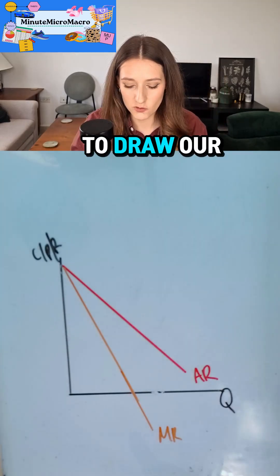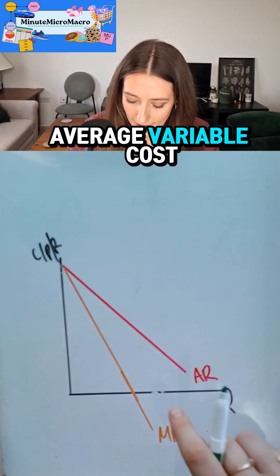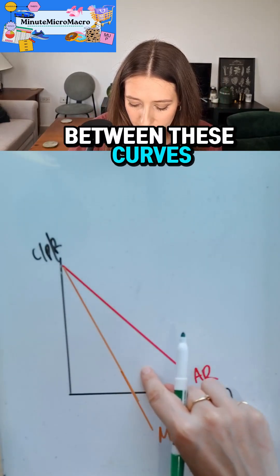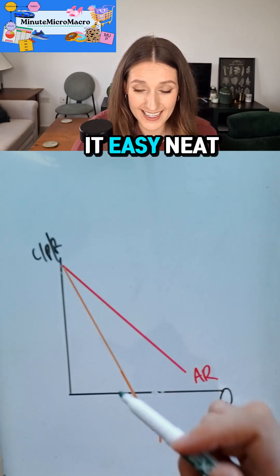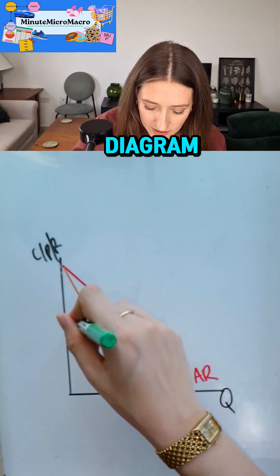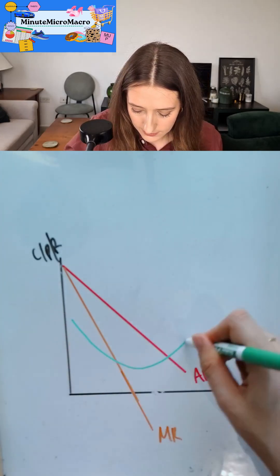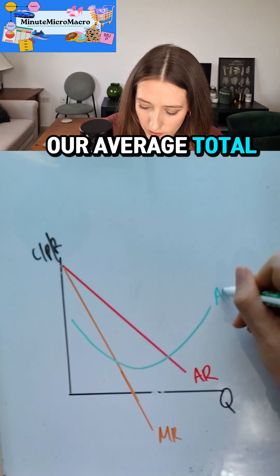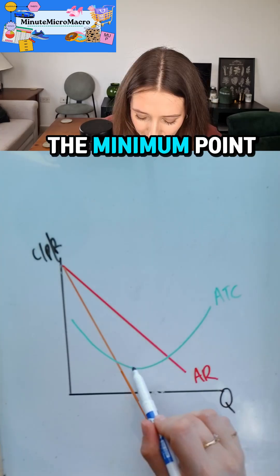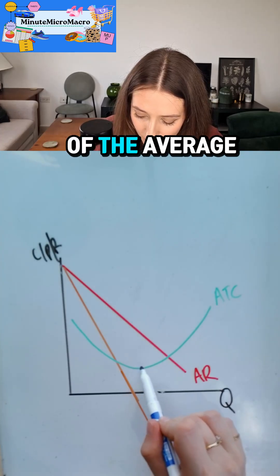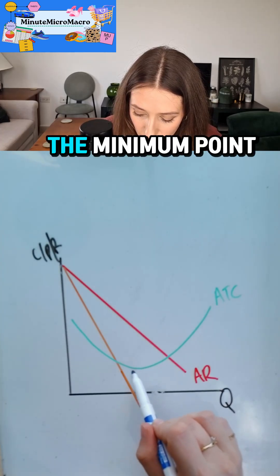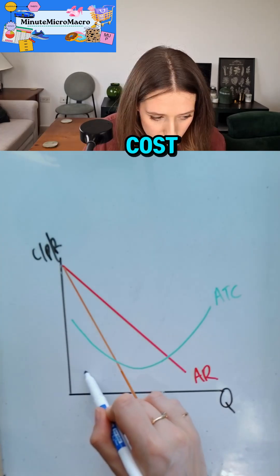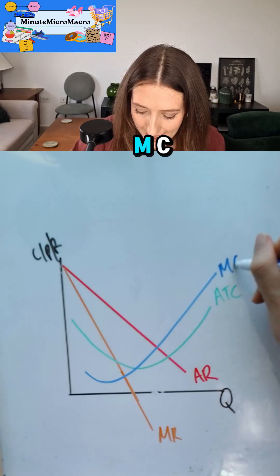We're going to draw our average variable cost so that the minimum point is between these curves, just to make an easy, neat diagram, and that is our average total cost. The minimum point of the average total cost curve is intersected by my marginal cost, MC.